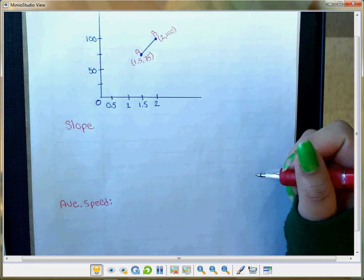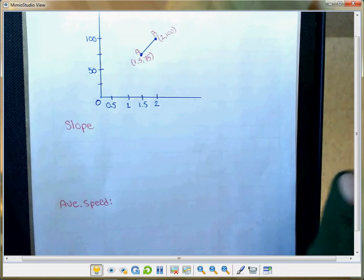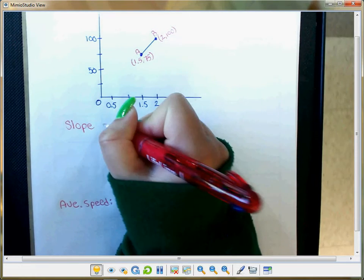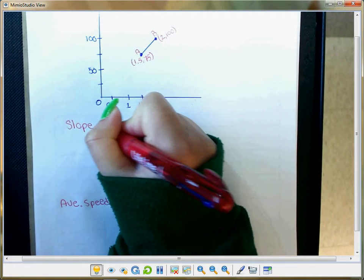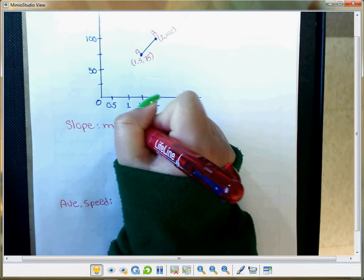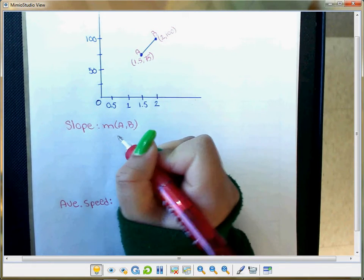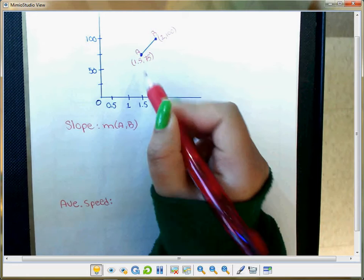For example, you have point A and point B, and you're going to find the slope, which equals M(A,B) where M is for slope. You have to find the points for A and B.